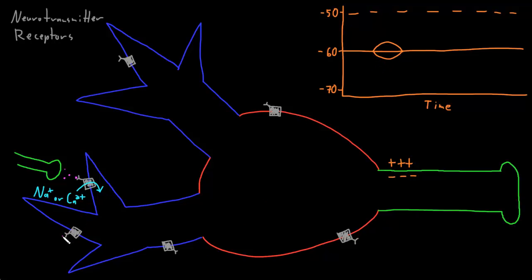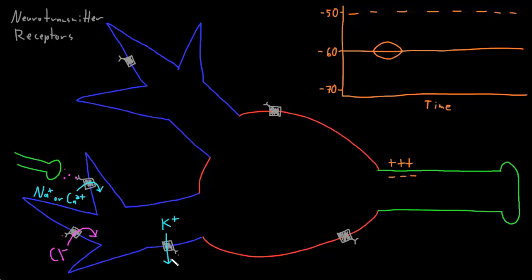Hyperpolarization usually occurs if a chloride channel is opened, because for most neurons chloride will flow into the neuron through an open channel, bringing negative charges into the already negative inside of the cell, making the membrane potential more negative. That's because chloride has a larger diffusion force driving it in against its smaller electrical force driving it out. Hyperpolarization may also occur if a potassium channel opens, because potassium's larger diffusion force will usually drive it out of the neuron against its smaller electrical force trying to drive it in.